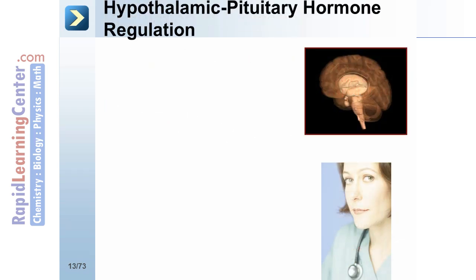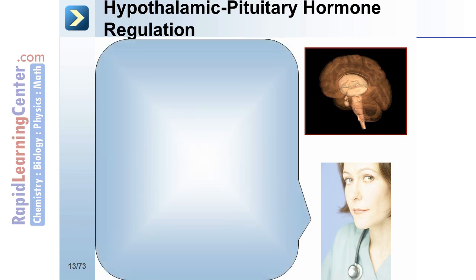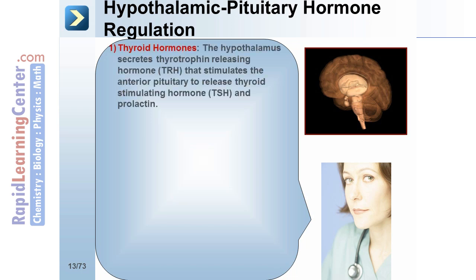As we have already discussed, the hypothalamus and pituitary regulate the release of hormones through various feedback mechanisms. Let's summarize the common ones. Thyroid hormones: the hypothalamus secretes thyrotrophin-releasing hormone, or TRH, that stimulates the anterior pituitary to release thyroid-stimulating hormone, TSH, and prolactin.